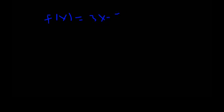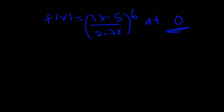f(x) is equal to (3x minus 5) over (2 minus 7x). Using the chain rule and quotient rule, the final answer is determined. The maximum and minimum number result is 0.